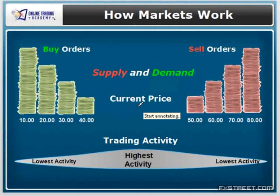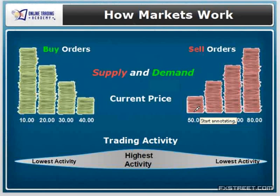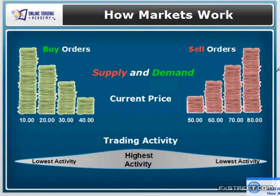We're just looking at current price — it could be the current price of any asset; the dollar versus the Japanese yen is what we're going to talk about. Above current price, Sam said he would have stacks of sell orders at different prices, called in by large institutions before the market opened mostly. Sam would take the orders as people called in, placing them well in advance of markets moving. Wherever he had the largest stack of buy orders was where true demand would be; the largest stack of sell orders was where true supply would be.